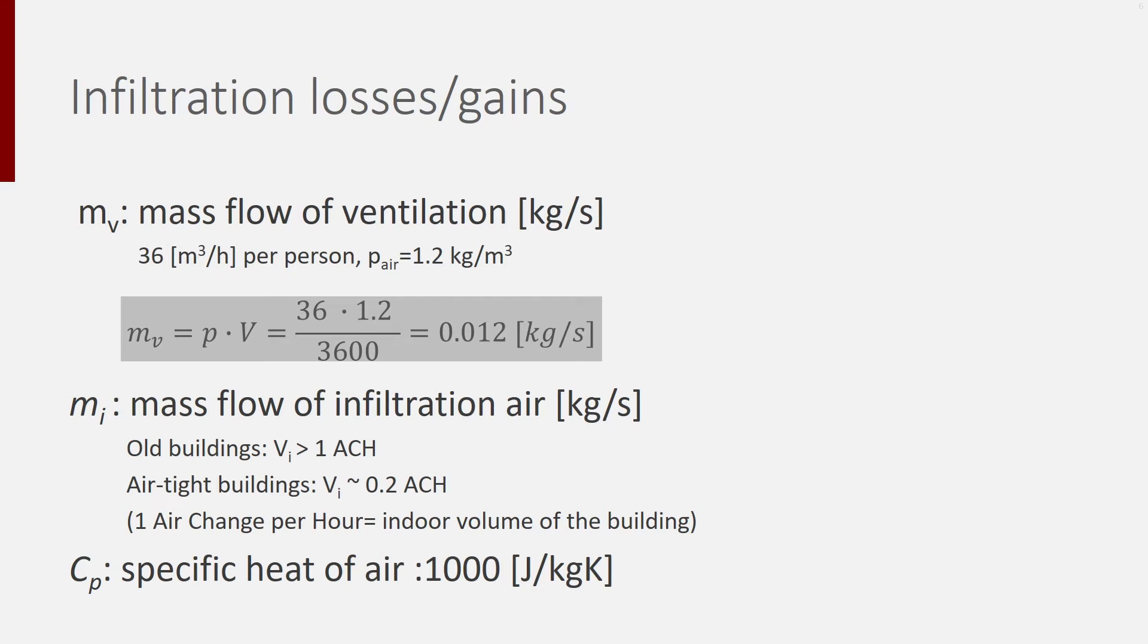When studying infiltration, the unit ACH is used a lot. ACH stands for air change rate per hour. One air change per hour is the same as one indoor volume of the building being refreshed in one hour. So, if I have a building volume of 100 cubic meter and I have infiltration of one ACH, it means that there is 100 cubic meter air change per hour in that building. If the ACH is 3, the air flow rate will be 300 cubic meter per hour.